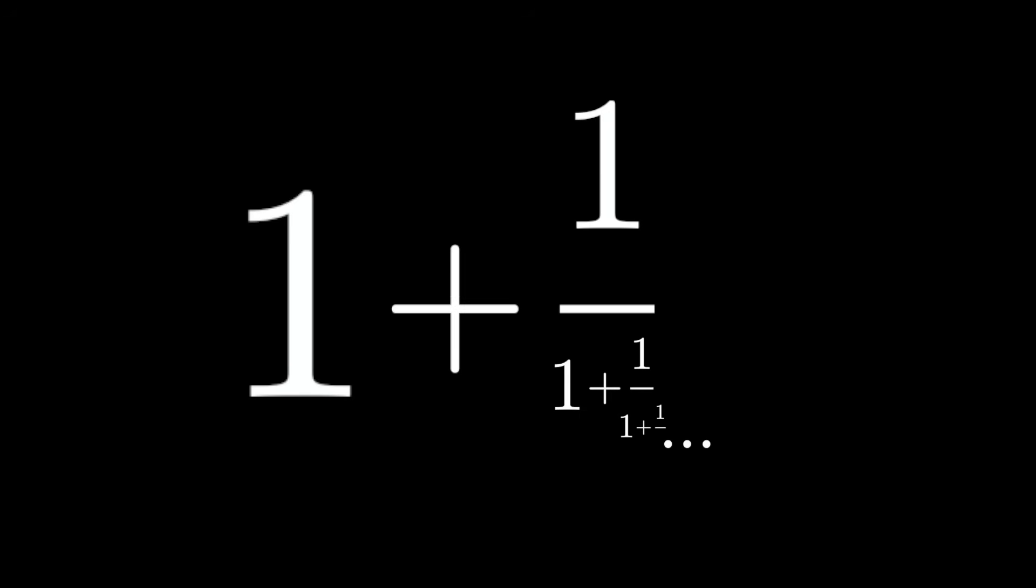If we start writing out the terms of this sequence, we'll see very quickly they start approaching this 1.618 number. You might know this as the golden ratio. And in fact,